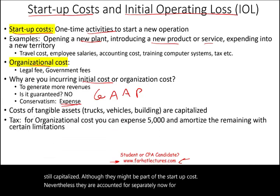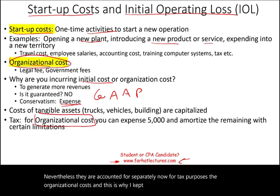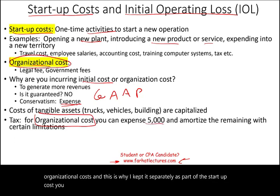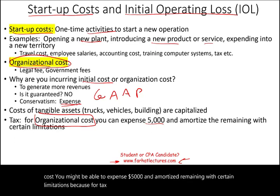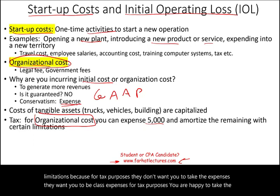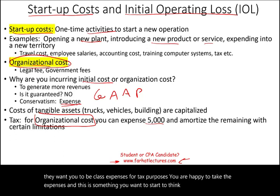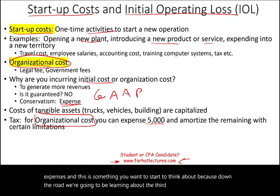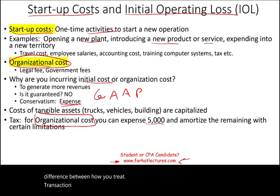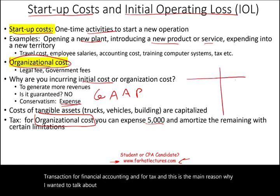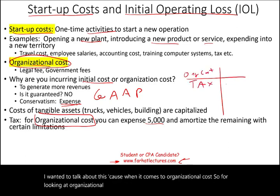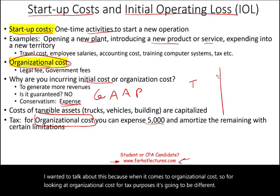For tax purposes, the organizational costs — and this is why I kept them separately as part of the startup cost — you might be able to expense $5,000 and amortize the remaining with certain limitations. For tax purposes, they don't want you to take all the expenses at once; they want you to take less expenses. For GAAP purposes, you are happy to take the expenses. This is something you want to start thinking about, because down the road we're going to be learning about deferred income taxes, which is the difference between how you treat a transaction for financial accounting and for tax. And this is the main reason why I wanted to talk about these, because when it comes to organizational costs, for tax purposes it's going to be different — it's going to be different for GAAP and tax.